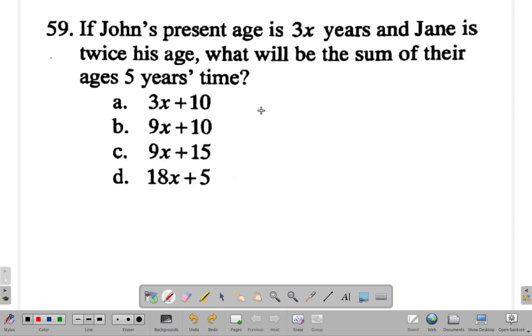All right, you've done it. What did you get? Here, John's present age is 3x years. Jane is twice his age, so Jane is 6x, twice his age. What will be the sum of their ages in five years time?